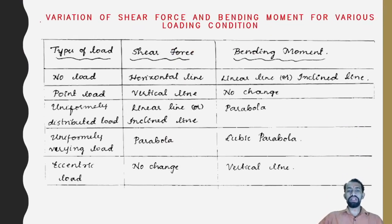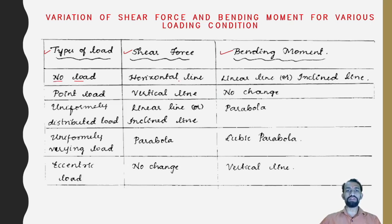We will be seeing the related variation of shear force and bending moment for various loading conditions and types of loads. When there is no load, a horizontal line will be the shear force — the beam remains as it is in the horizontal line. A linear or inclined line may appear because of the weight of the member.